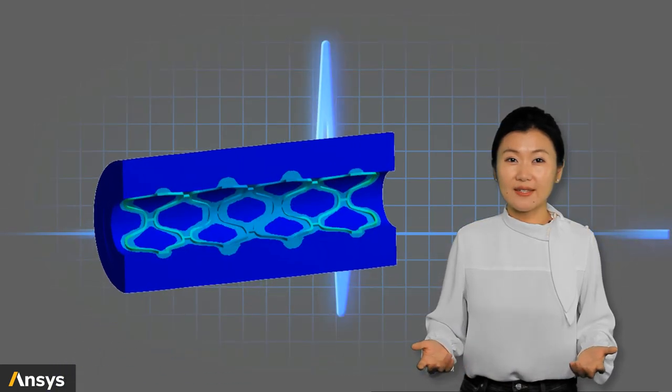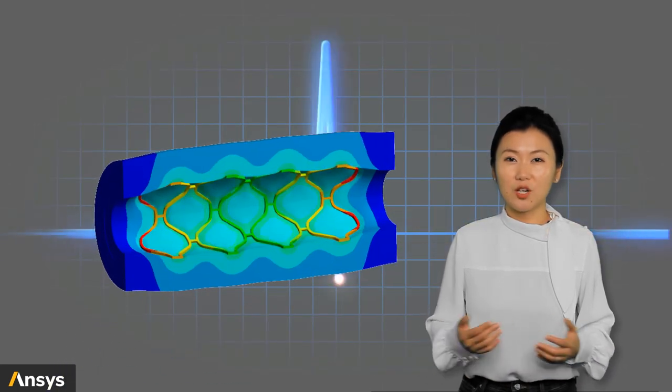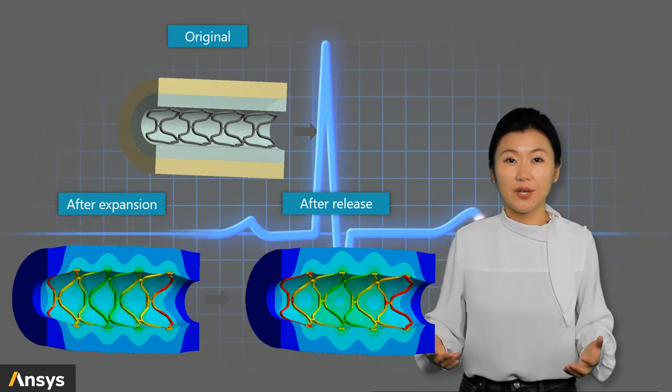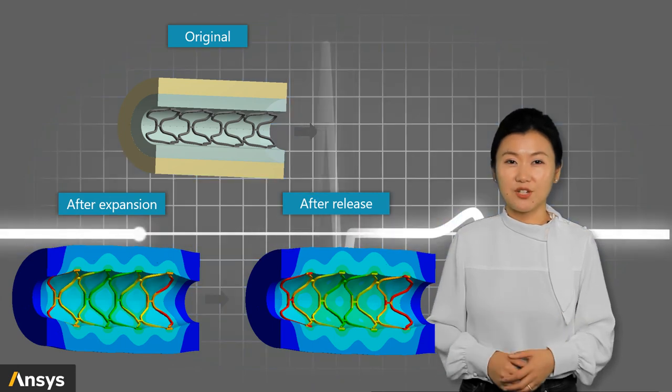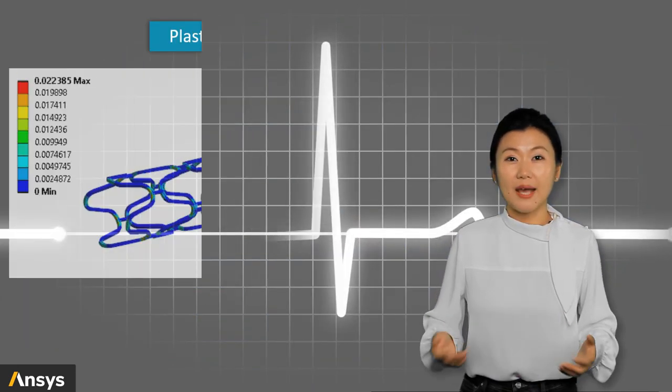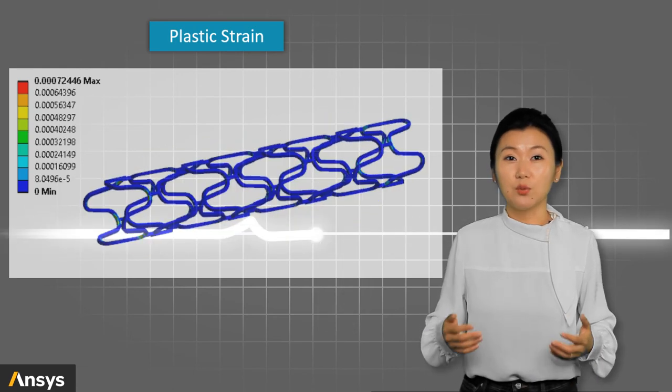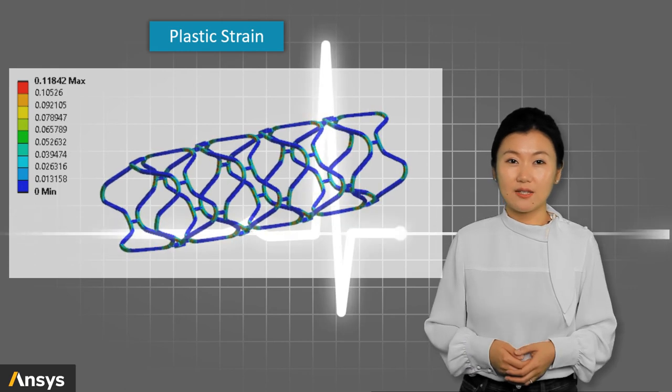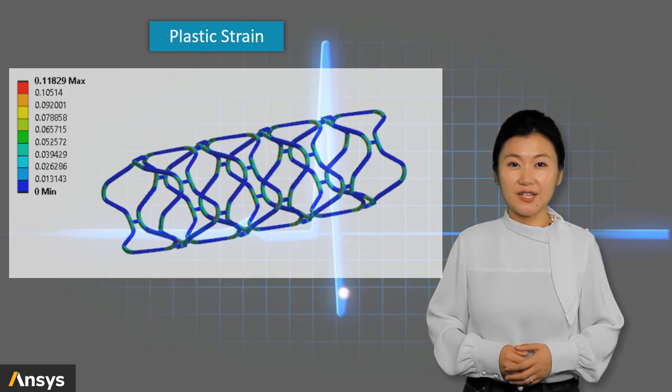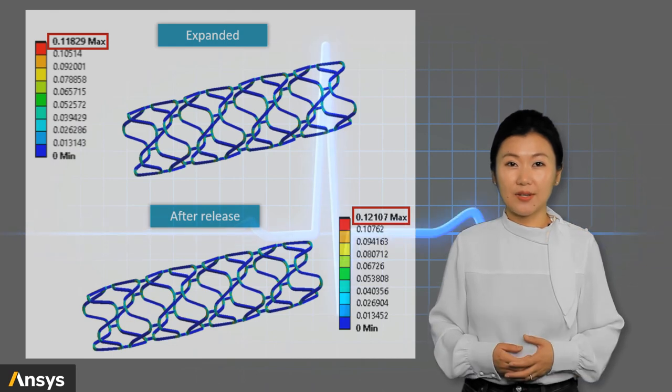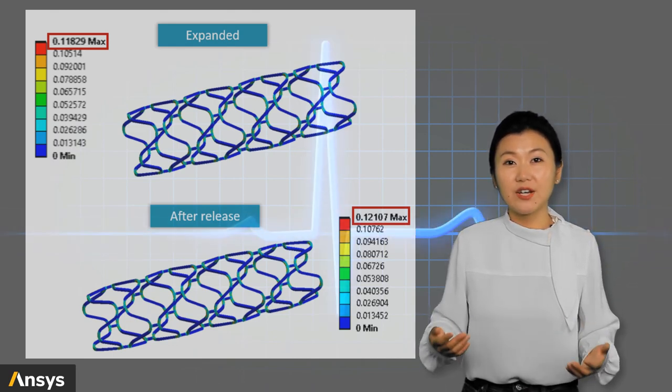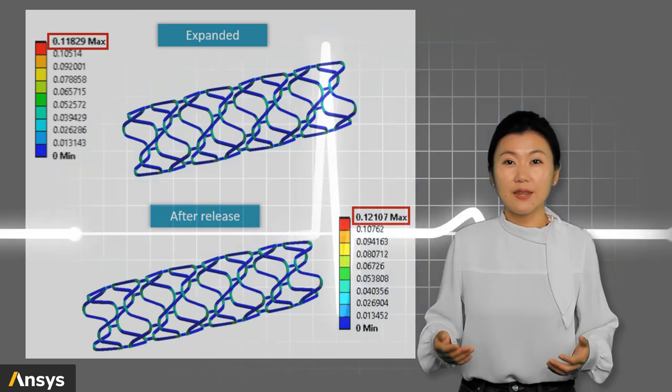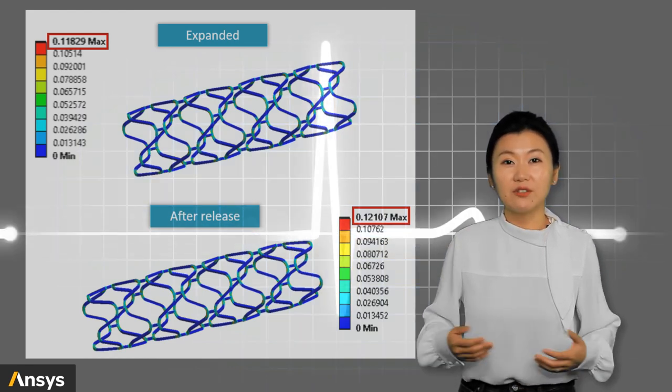Based on the results, we can see that the stent recoils a little bit in the second step when pressure is removed. But the radius of the artery is indeed increased permanently after the procedure. As for plastic strain, we know that it is unrecoverable and we saw in the paperclip problem, the plastic strain remains to be the same after the release. However, in this case, you will find that the accumulated plastic strain is a little bit increased in the final shape compared to the shape before removing the pressure. This is because the artery and plaque parts are made of elastic materials.